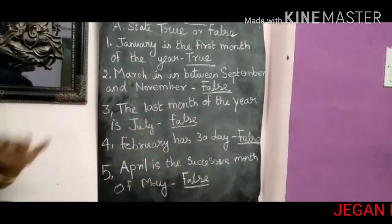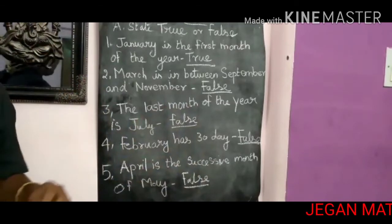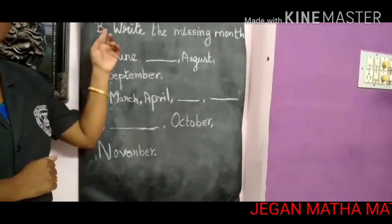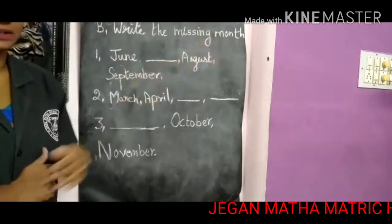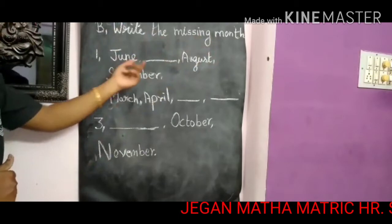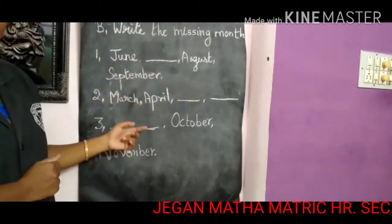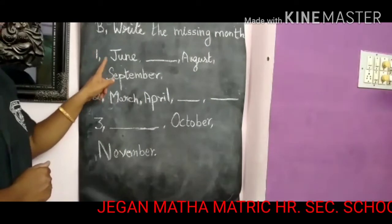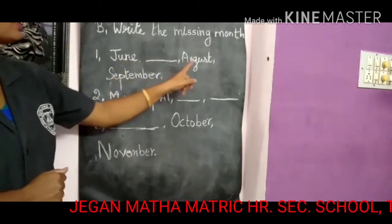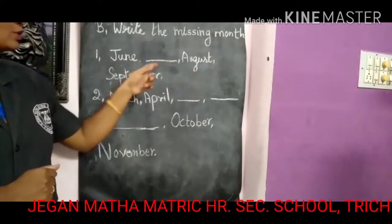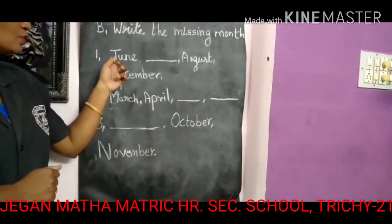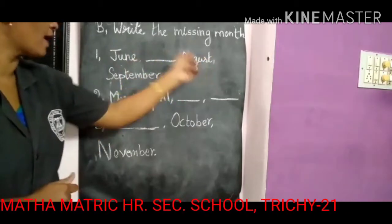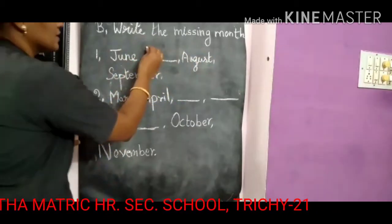Now let's see the next one — Section B. Write the missing month. Question B, number one: June, ___, August, September. After June comes July, so the answer is July.